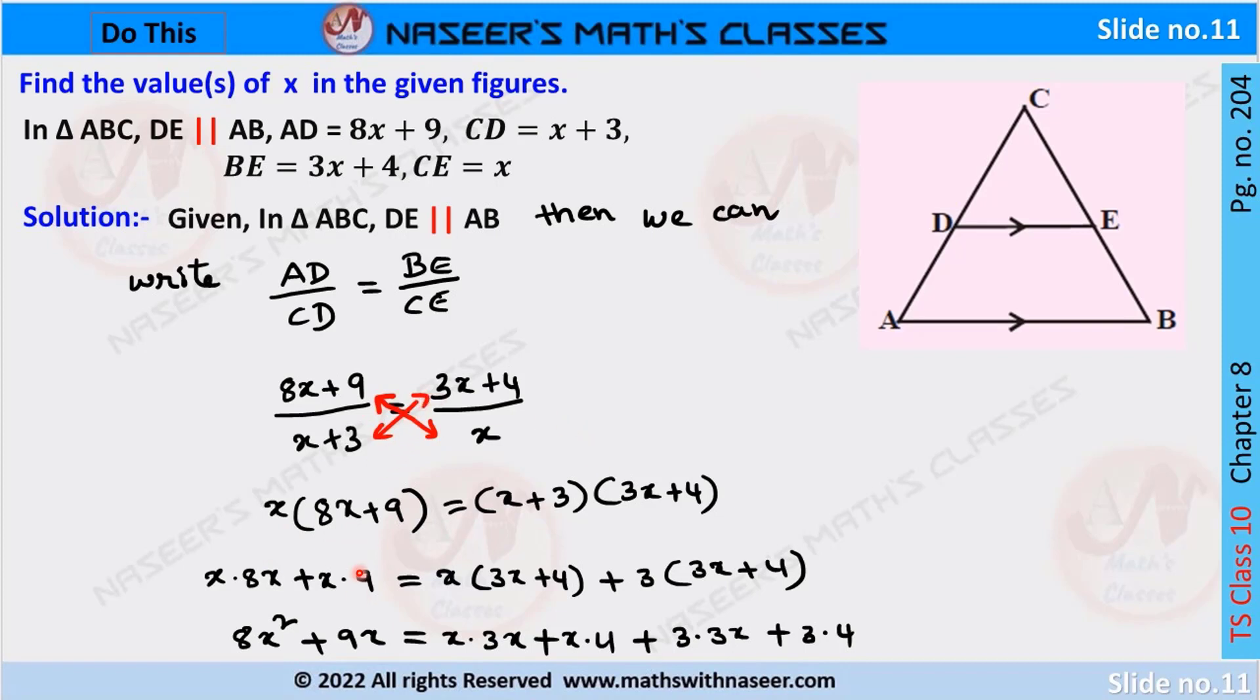By applying the distributive law, we can write X into 8X plus X into 9 equals X into 3X plus X into 4 plus 3 into 3X plus 3 into 4. In the left-hand side, it can be written as 8X squared plus 9X equals...